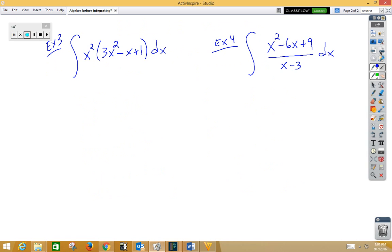In example 3 we could distribute before we start. So we have the integral of 3x to the fourth minus x cubed plus x squared dx.